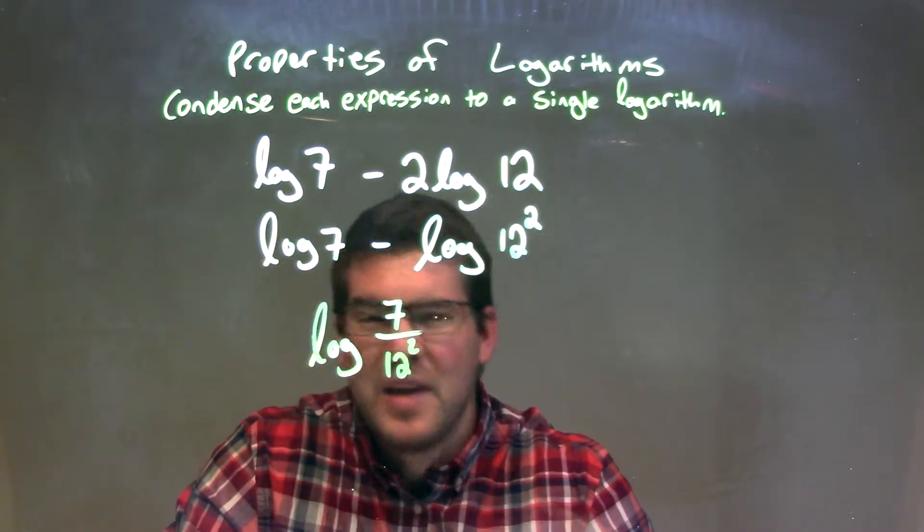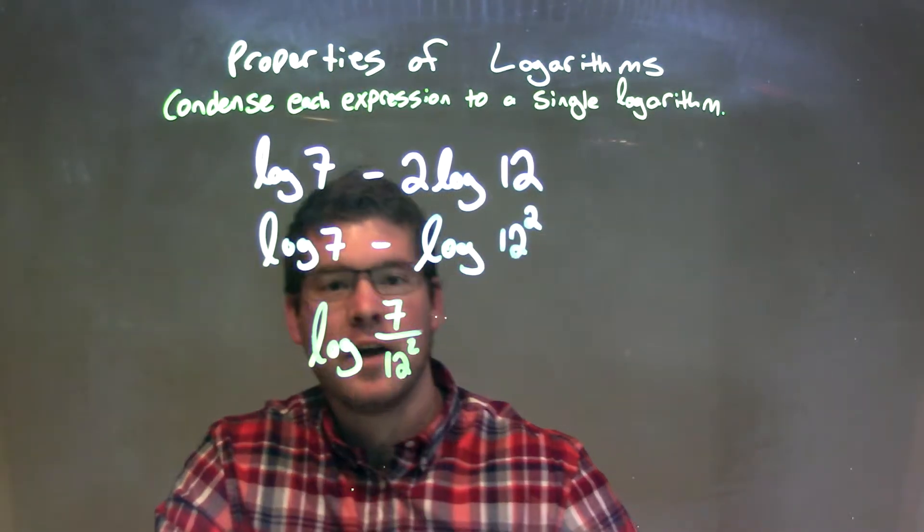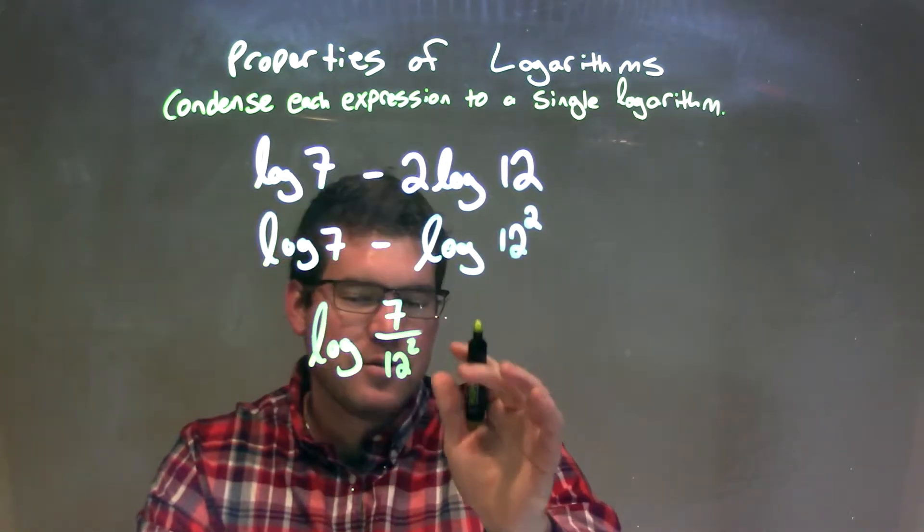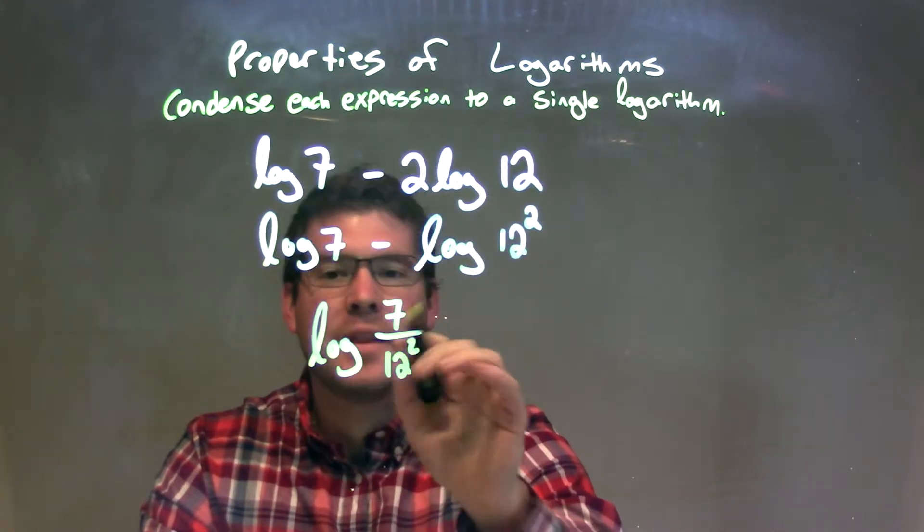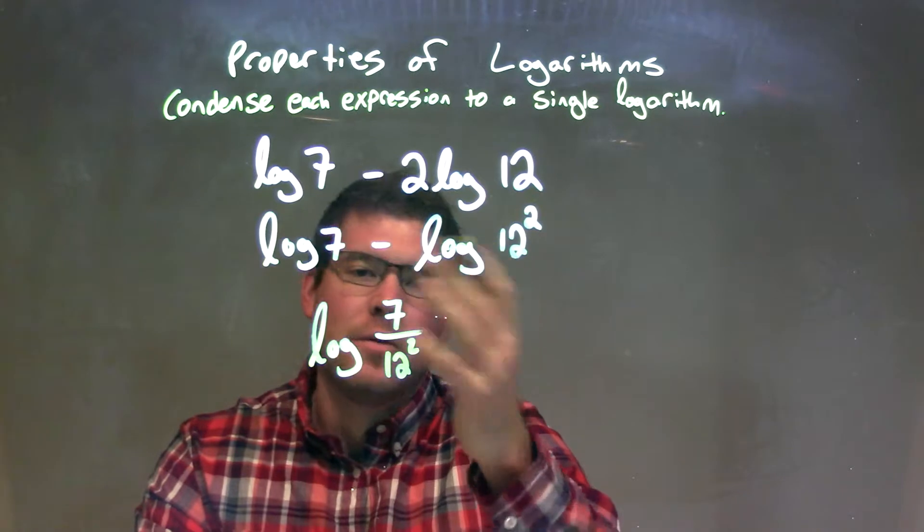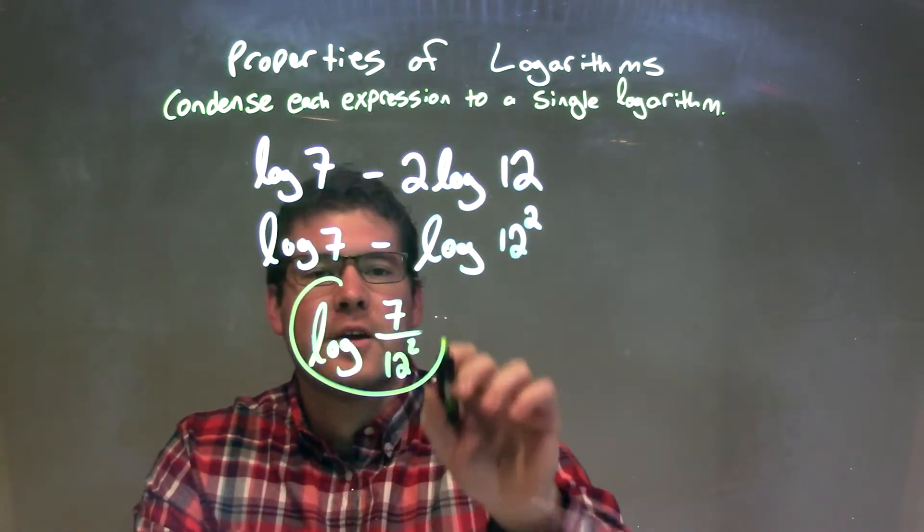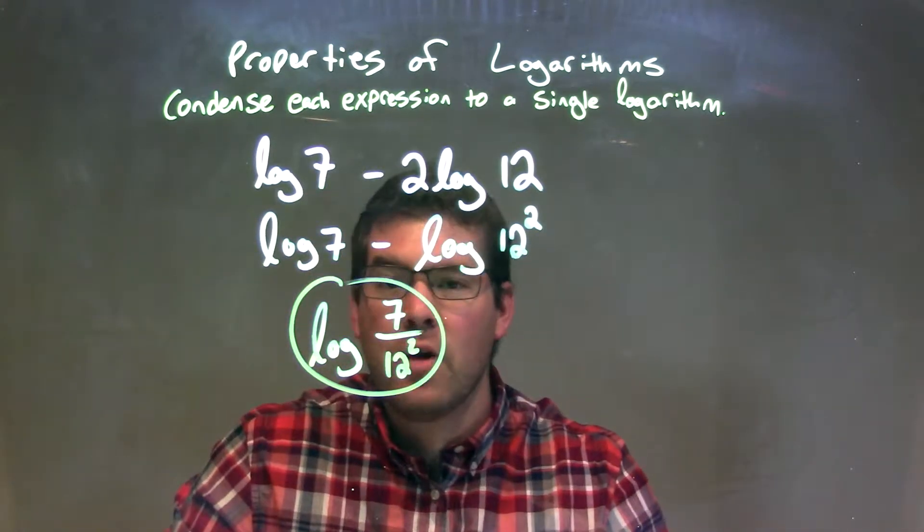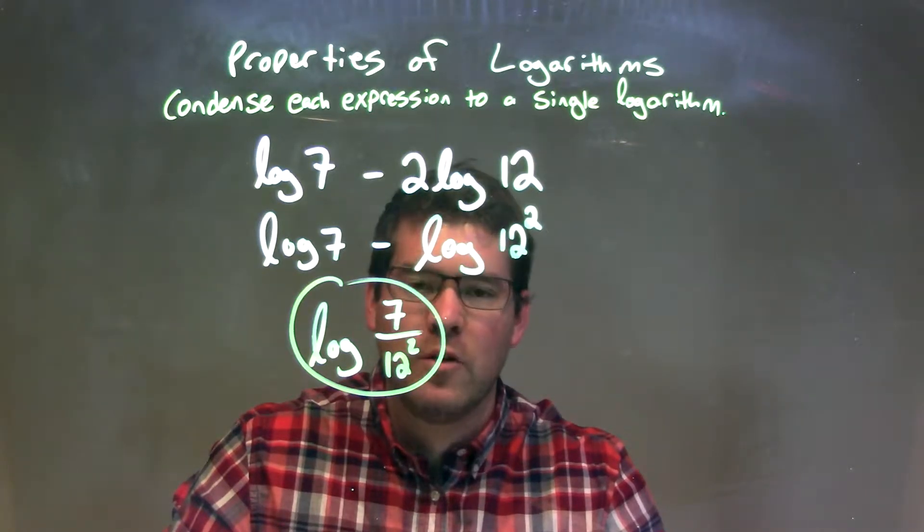From there, I see it simplified enough. Some people might say you could square the 12. I kind of like it like this because we might expand it back out. Anyway, our final answer here is log of 7 divided by 12 squared.